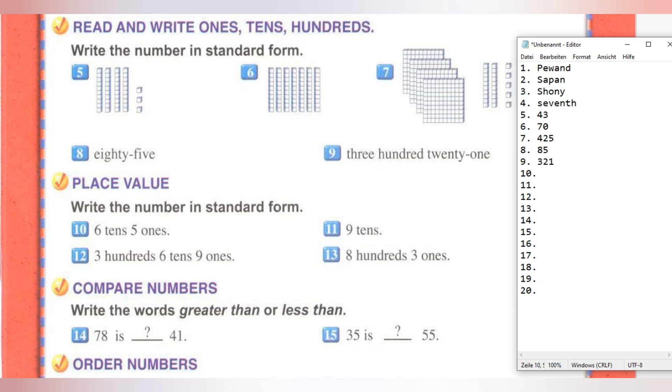Next, Place Value. Write the number in standard form. Six tens, five ones: 65. Question 11: nine tens, 300, six tens, nine ones, which means 369.